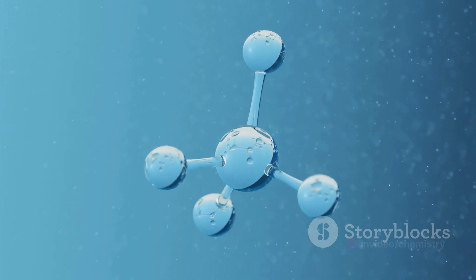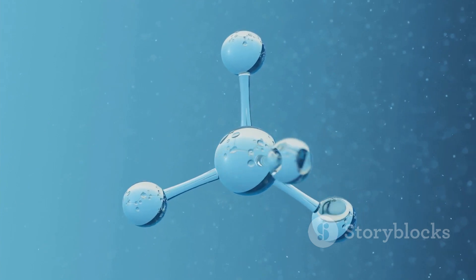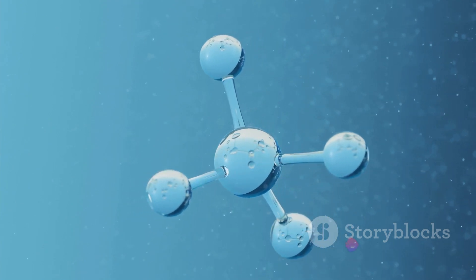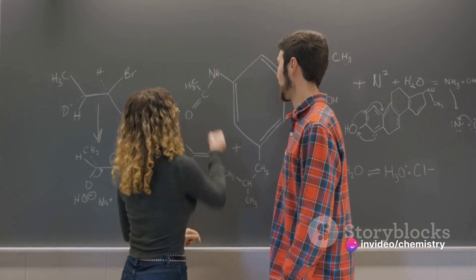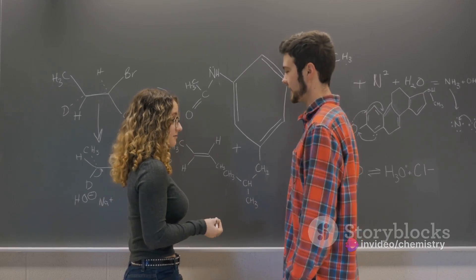Symbols represent the different elements, lines represent the bonds between them, and the arrangement of these symbols and lines reflects the molecule's shape. Charge notations indicate whether an atom has gained or lost electrons, providing insight into the atom's chemical behavior.